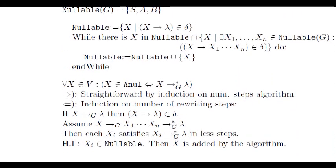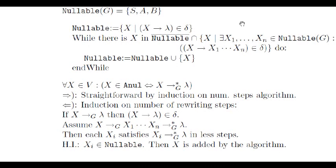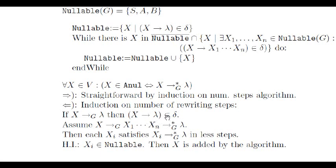Here we have our algorithm again. Let's try to get convinced that it computes all the nullable symbols for any grammar. It is clear that all the symbols that are marked as nullable are actually nullable. This can be easily proven by induction on the number of execution steps of the algorithm. We still have to see that every nullable symbol is marked at some step. If a symbol X is marked in one step, then it is clear that there is a lambda production for X. Hence, X has been marked in the first step of the algorithm.